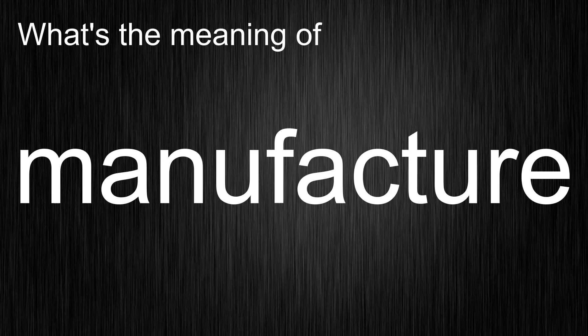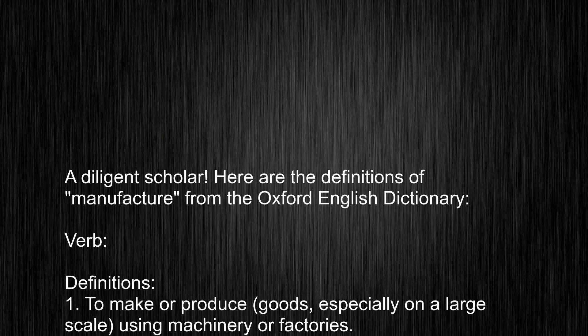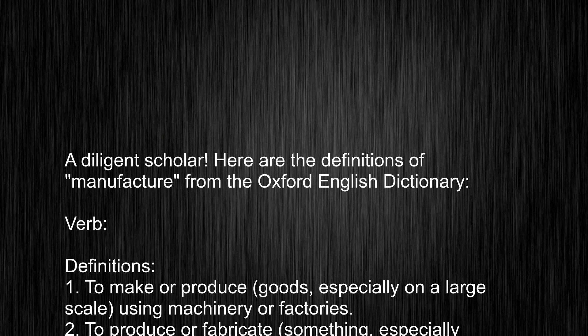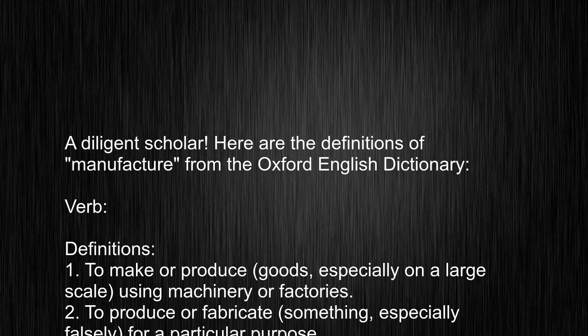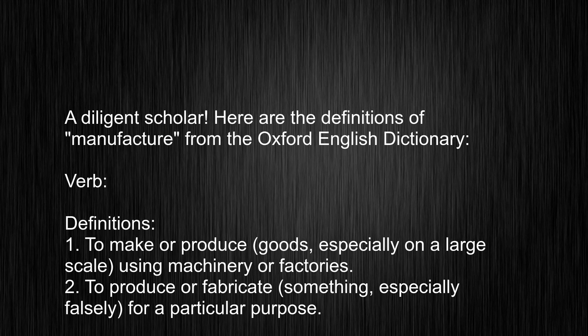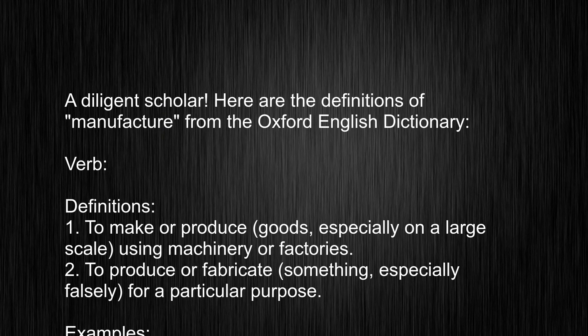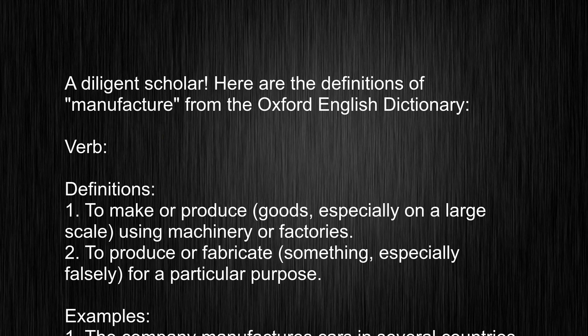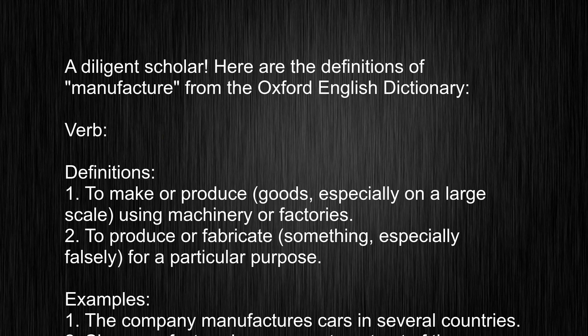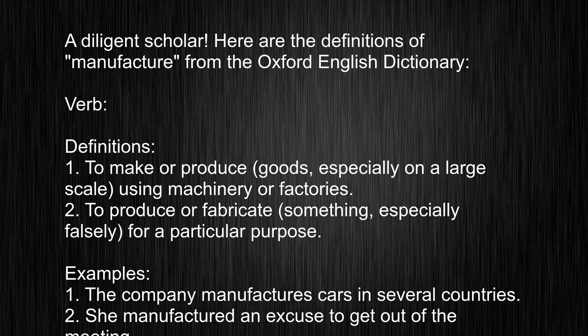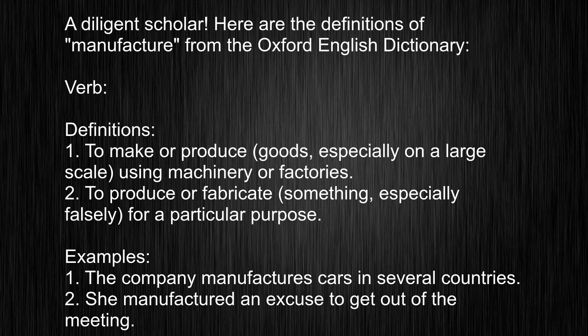Meaning of manufacture. Here are the definitions of manufacture from the Oxford English Dictionary. Verb Definition 1: To make or produce goods, especially on a large scale, using machinery or factories.